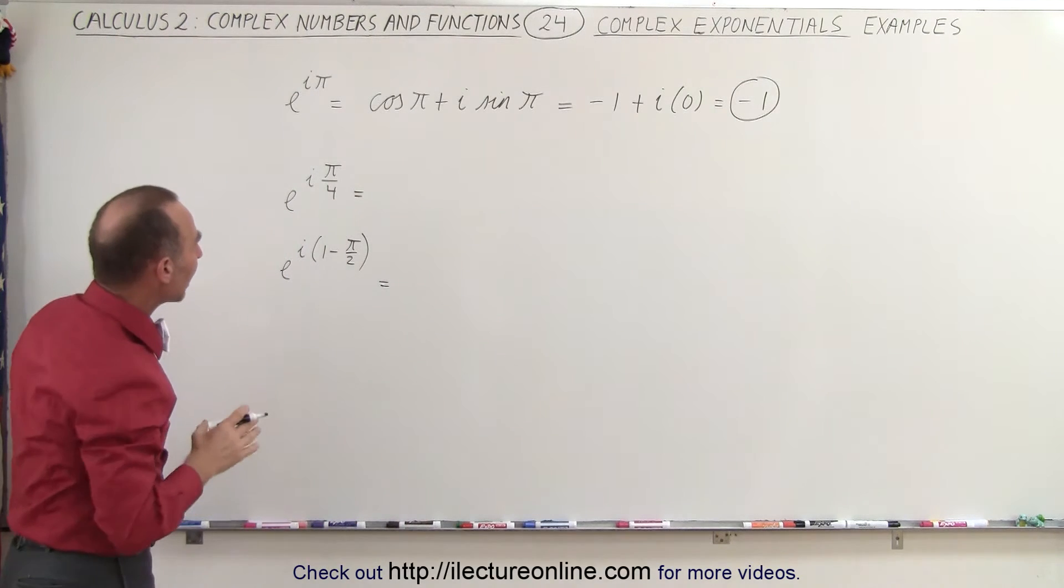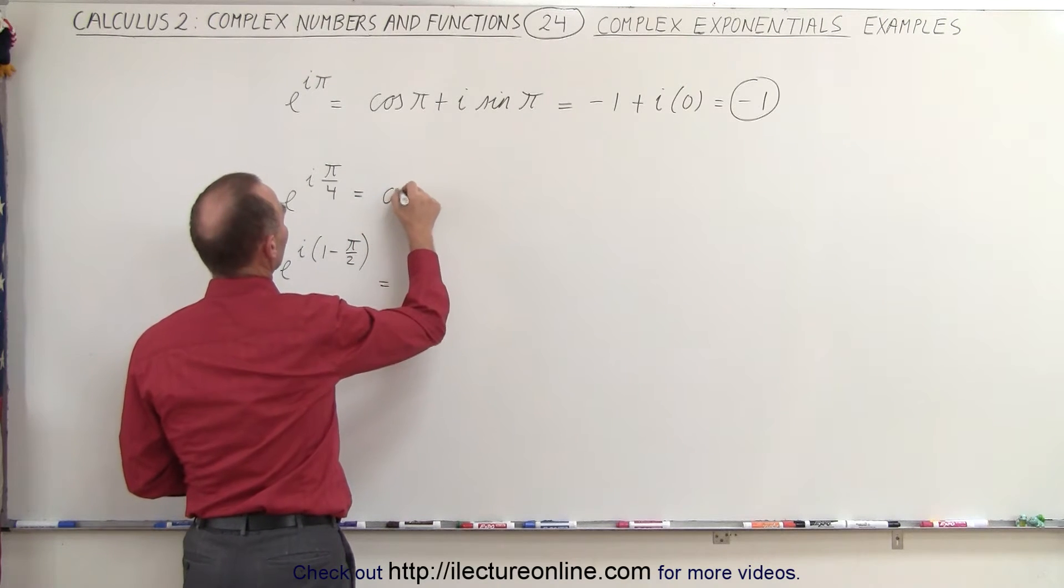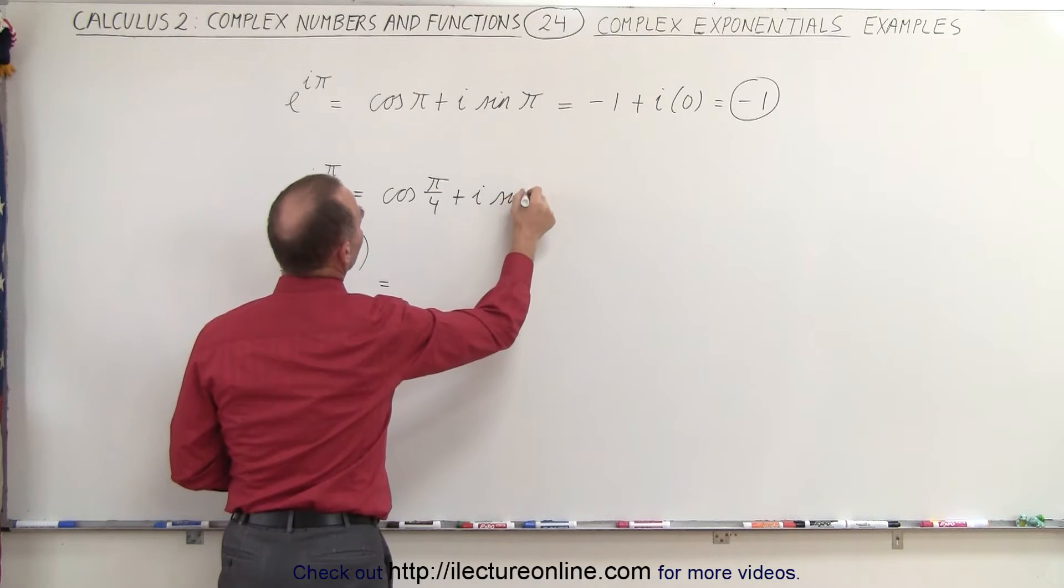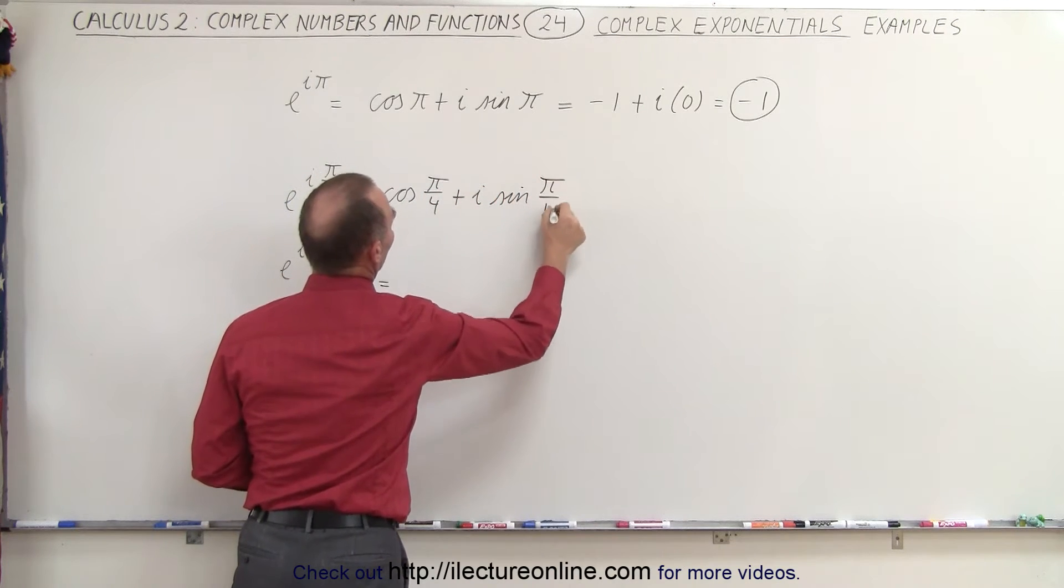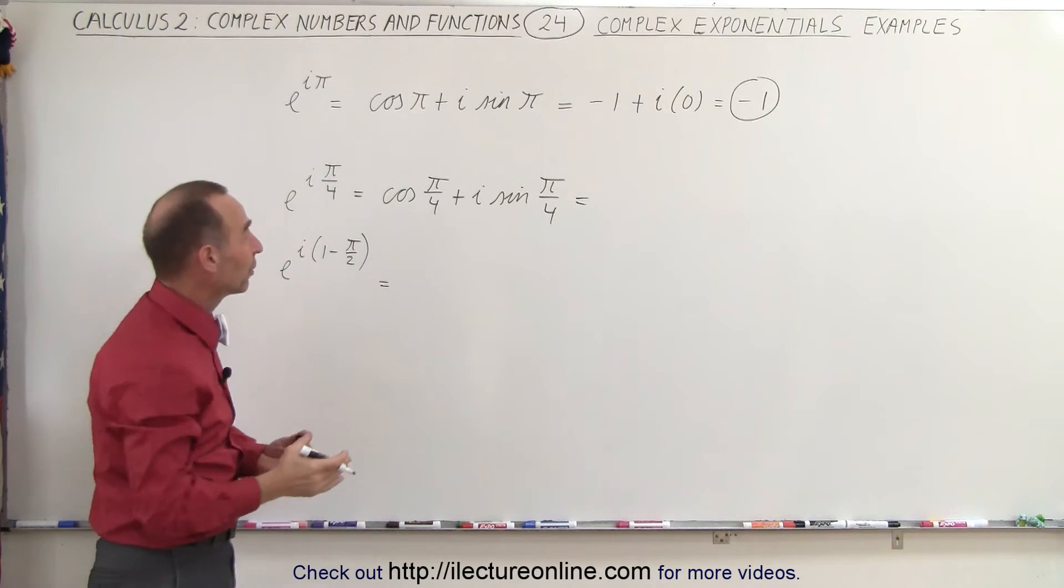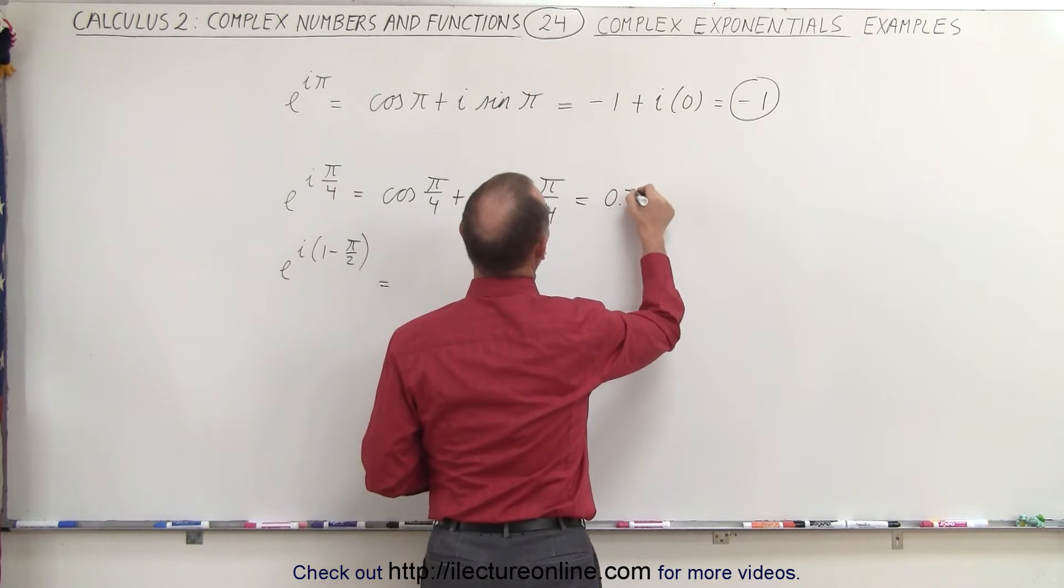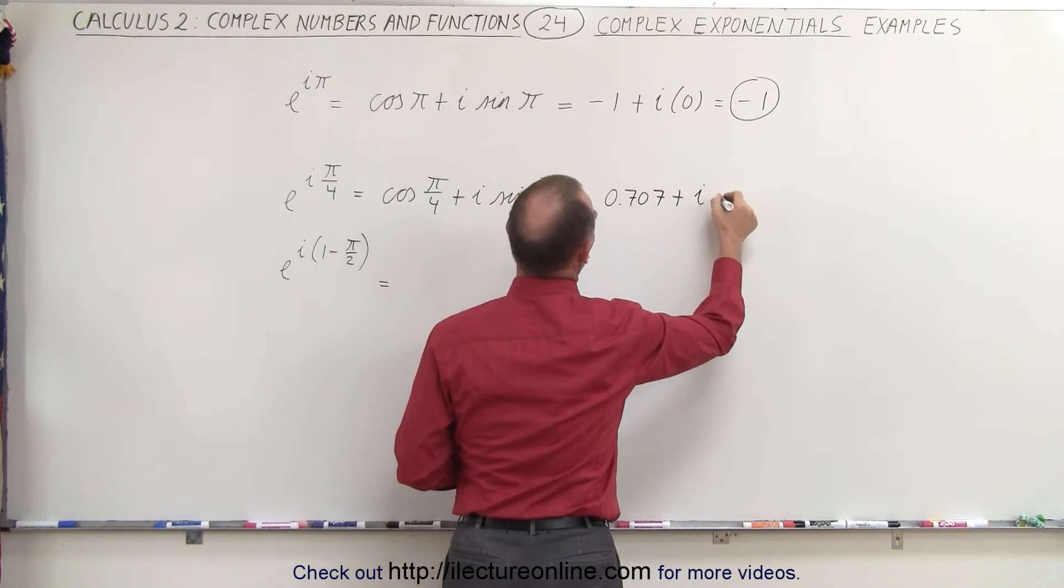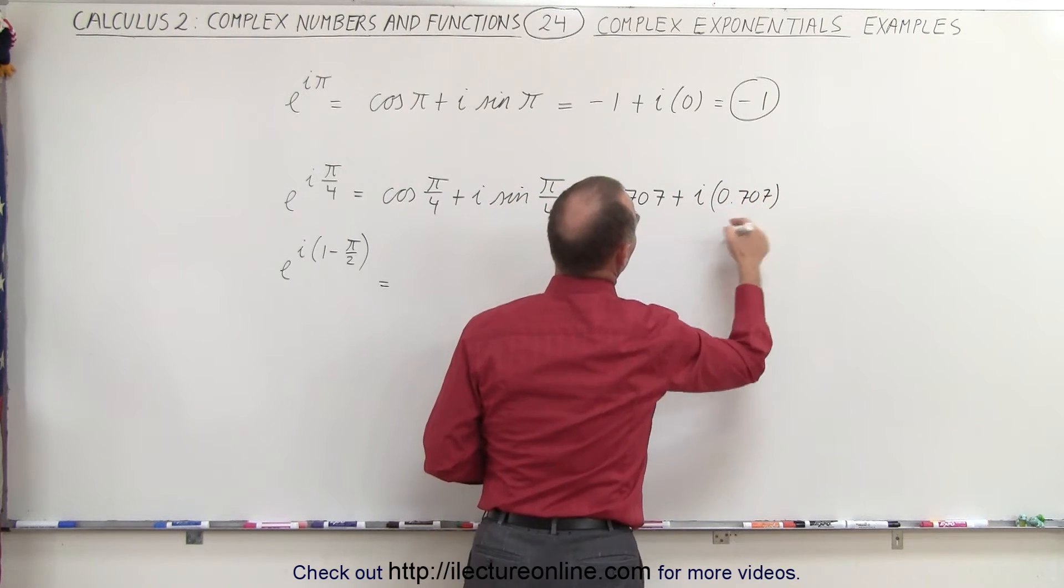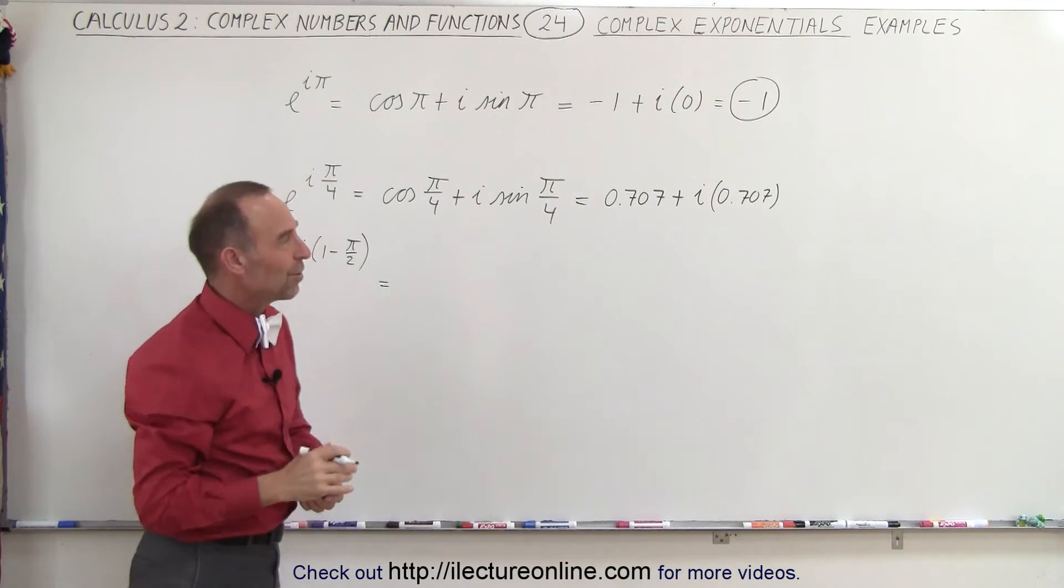How about e to the i times pi over four? Well, we do the same thing here. We can write this as the cosine of pi over four plus i times the sine of pi over four. And then we realize that the cosine of pi over four, since pi over four is 45 degrees, is 0.707. So this can be written as 0.707 plus i times 0.707. In this case, it might be better to write the i behind it so we don't have to use parentheses, but at least you have the idea.